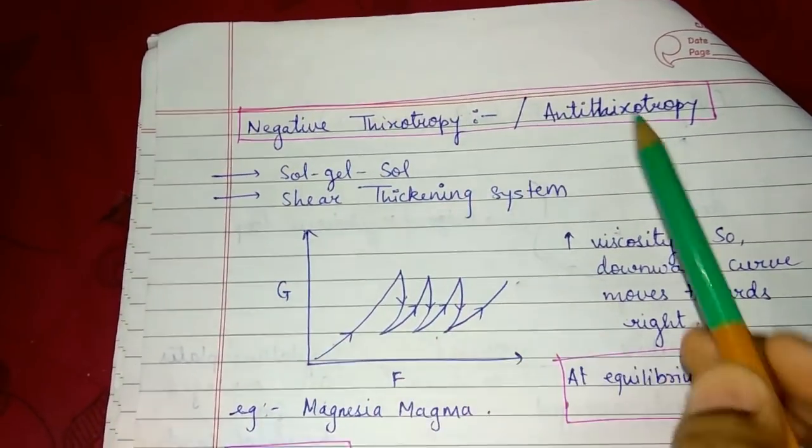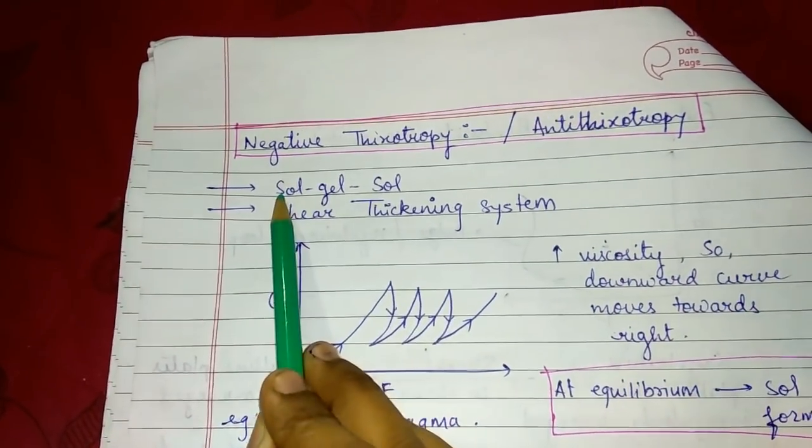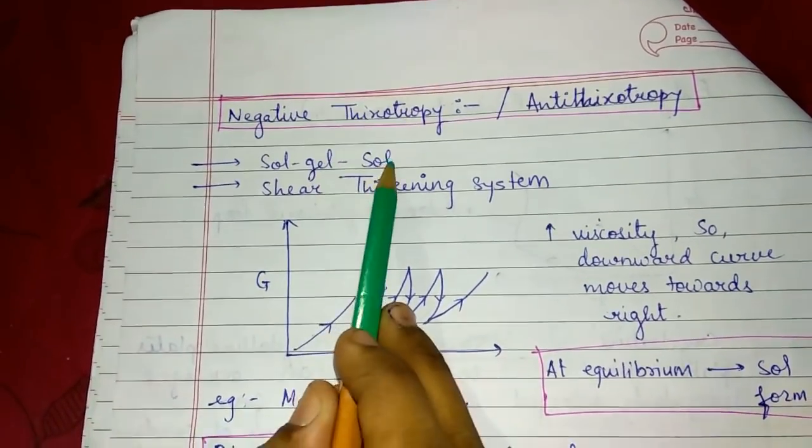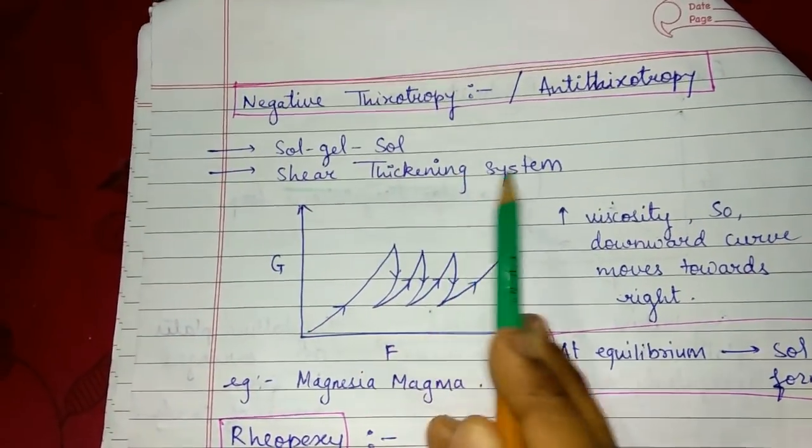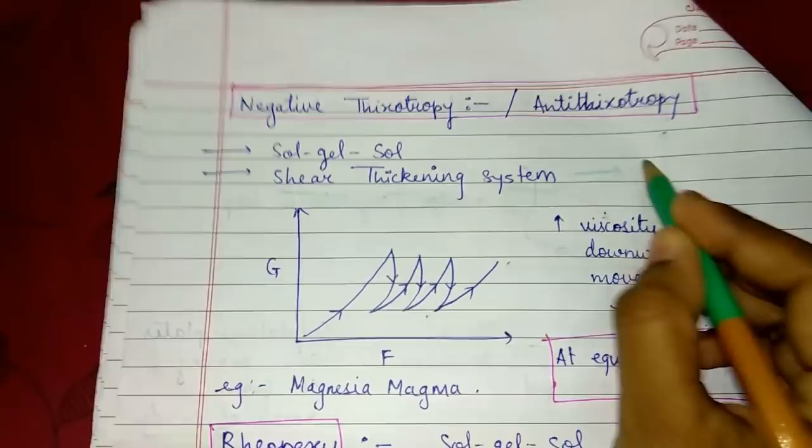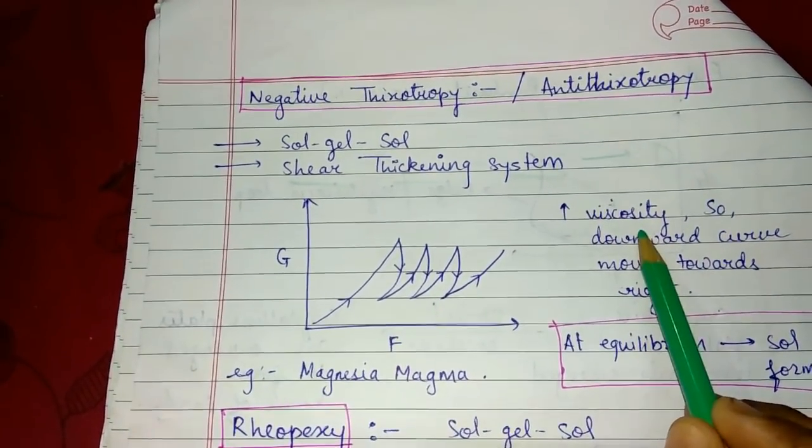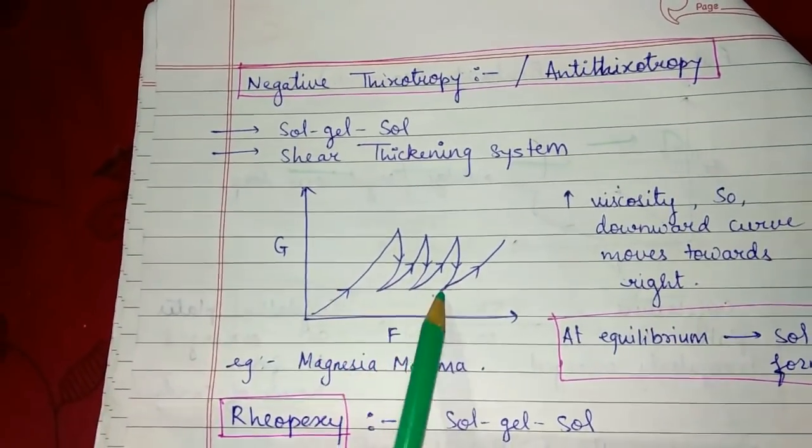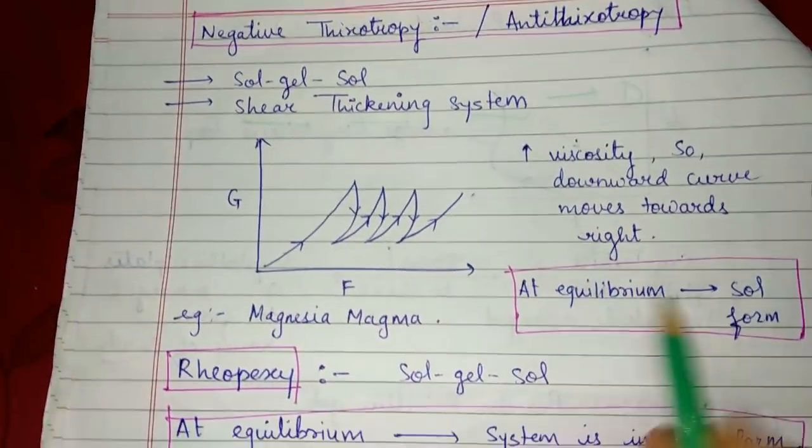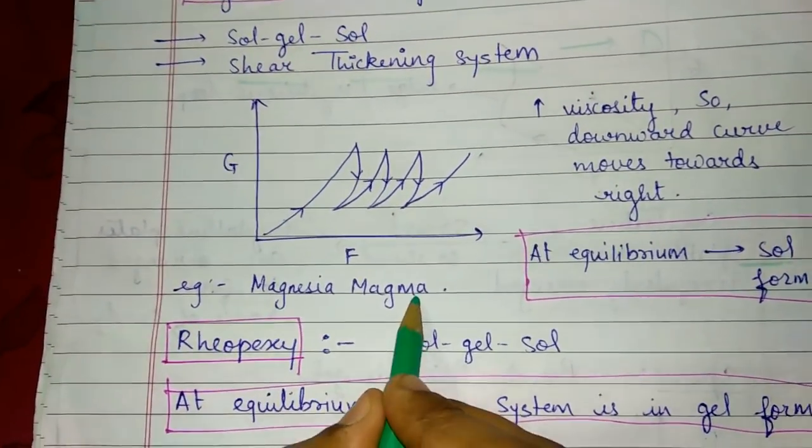Negative thixotropy, also called anti-thixotropy, in which sol is converted to gel and gel is converted to sol. This mostly follows shear thickening system, which is followed by dilatant materials. In this, there is increase in viscosity, so the downward curves move toward right, so the graphs shift towards right. At equilibrium, it is in sol form. Example: magnesia magma.